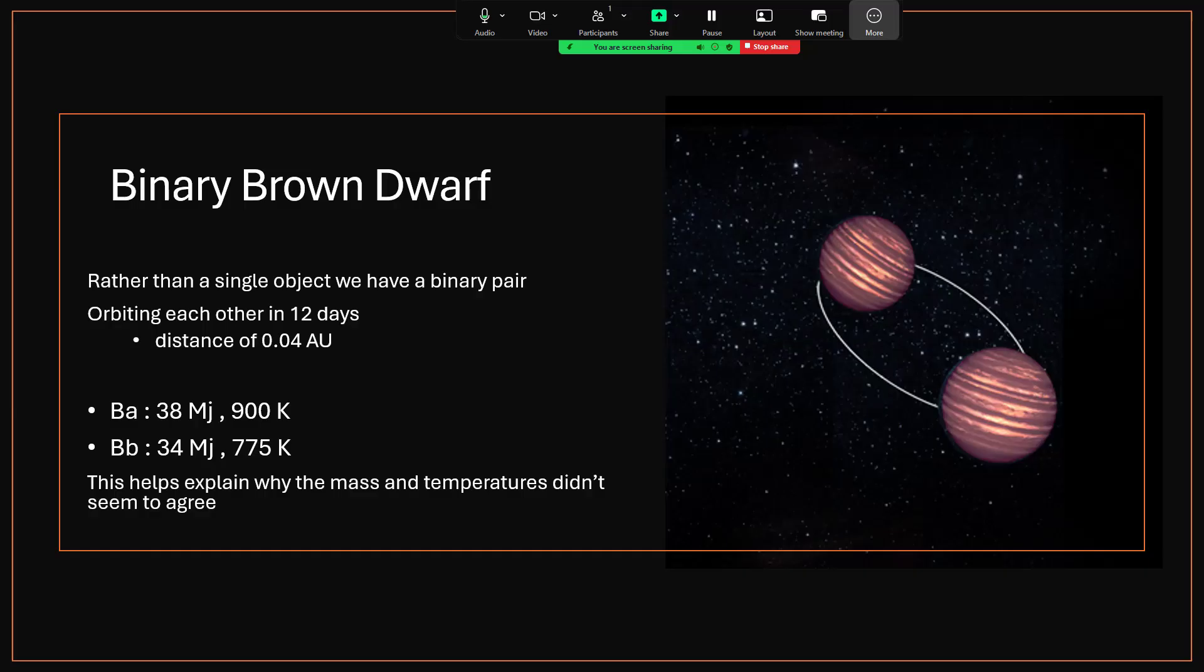And what we were able to determine from all of this, from Kepler's laws again, that we have two objects, one with 38 Jupiter masses, temperature 900 Kelvin, and one with slightly less, 34 Jupiter masses at 775. Now that makes sense of the mass temperature relationship. These objects being smaller will have been able to carry out less fusion and had less deuterium in the first place, and so have ended up at this cooler temperature. And we haven't got one single 70-something Jupiter mass object with a curiously low temperature. So this makes sense of the problem.